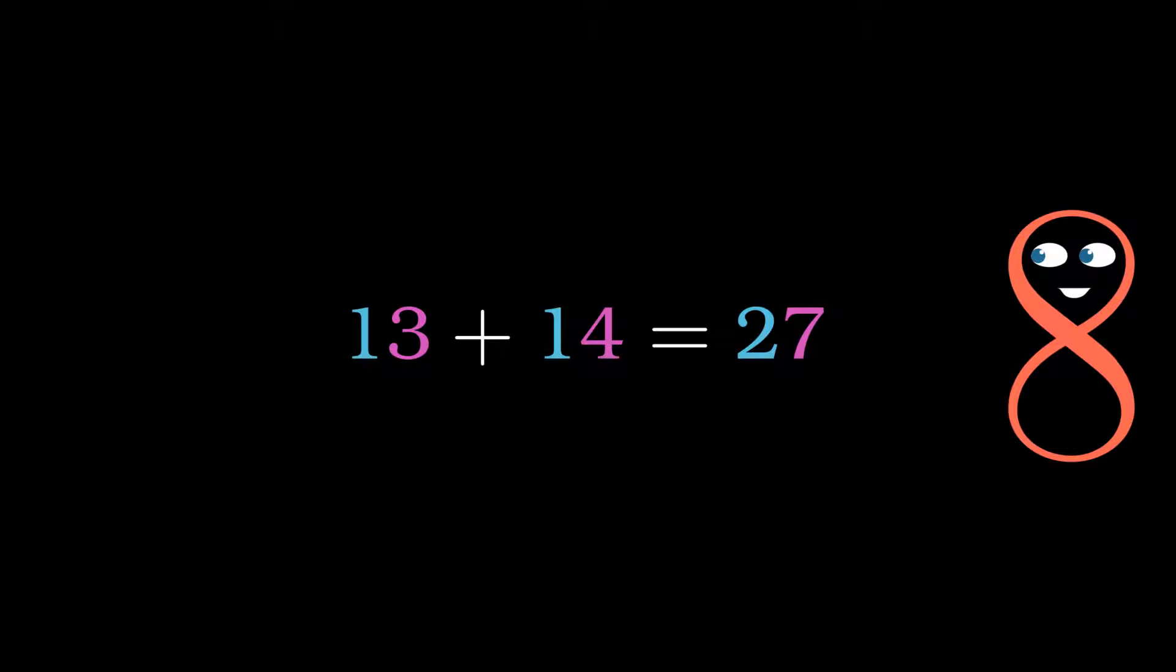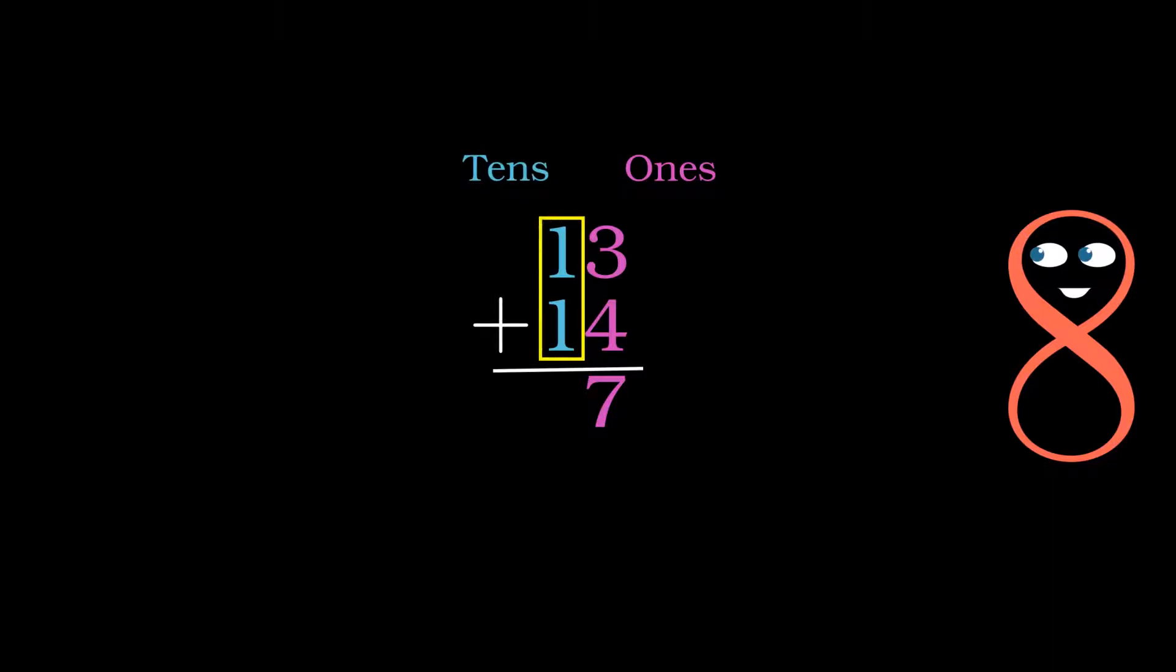But here is a safer way to carry out additions among multiple-digit numbers. First, we align the numbers vertically like this. The digits on the right are the ones, or just the ones we need to add first, no pun intended, and then we add the digits on the left only to get the same result as before, 27.